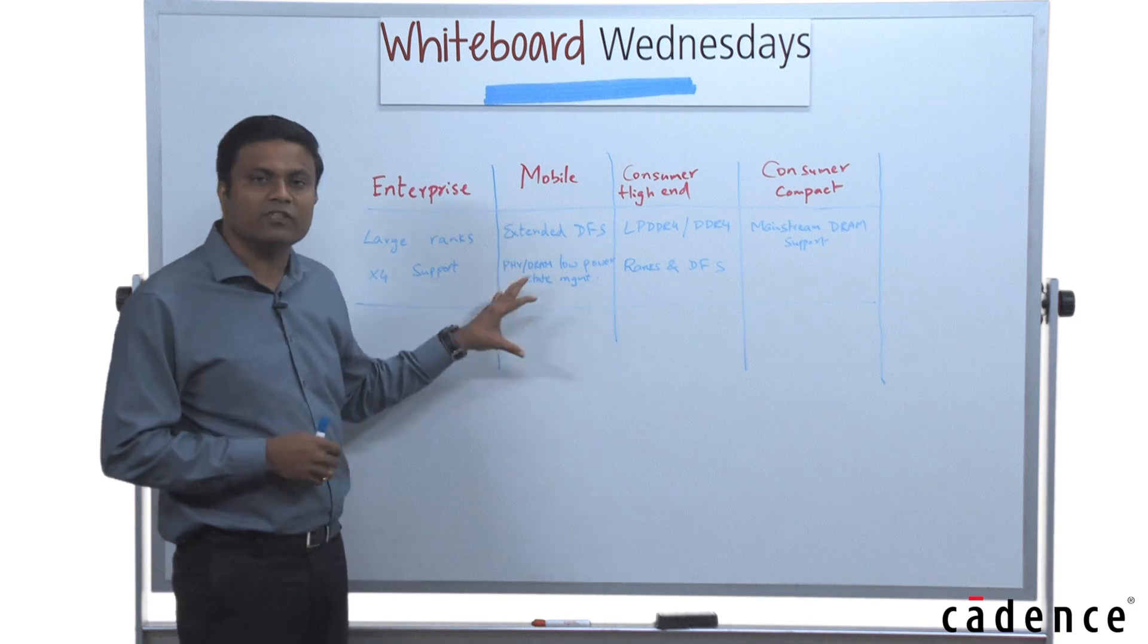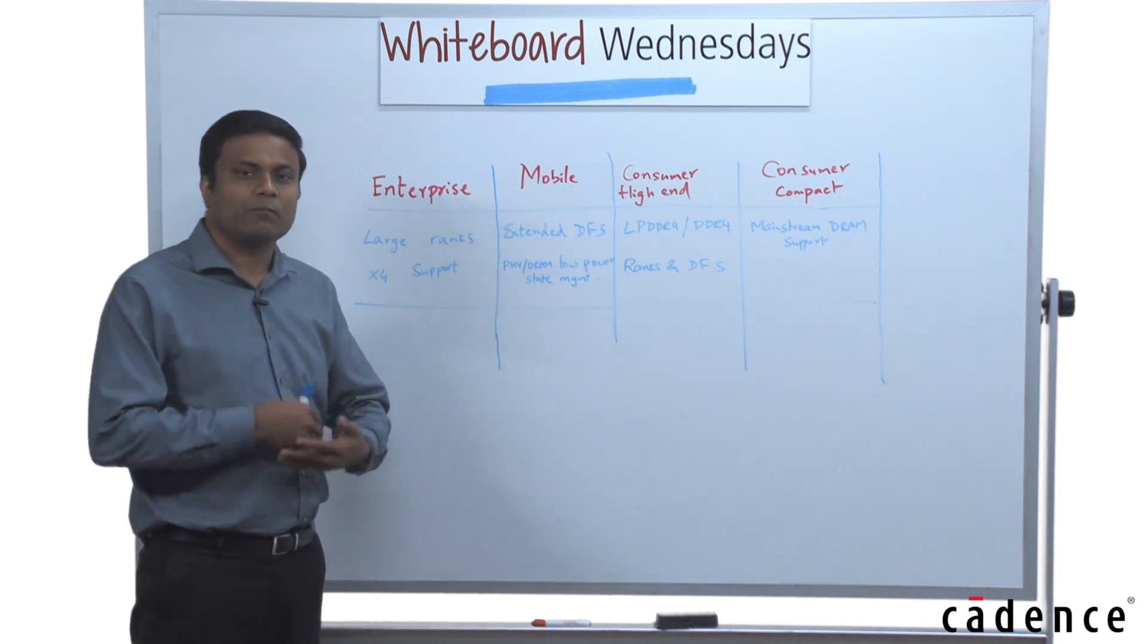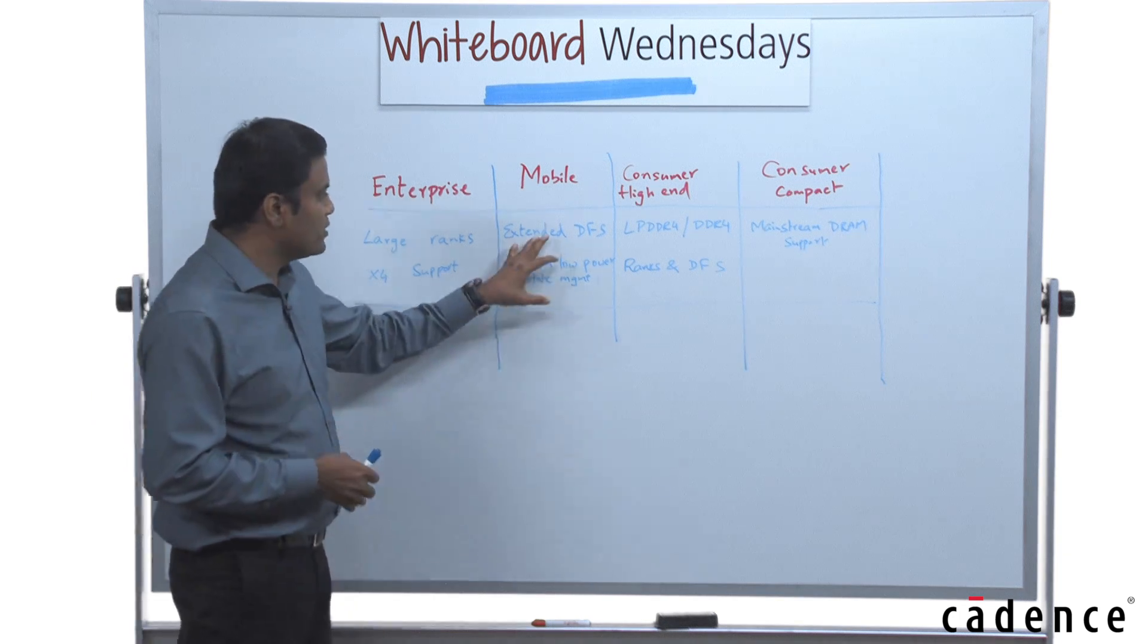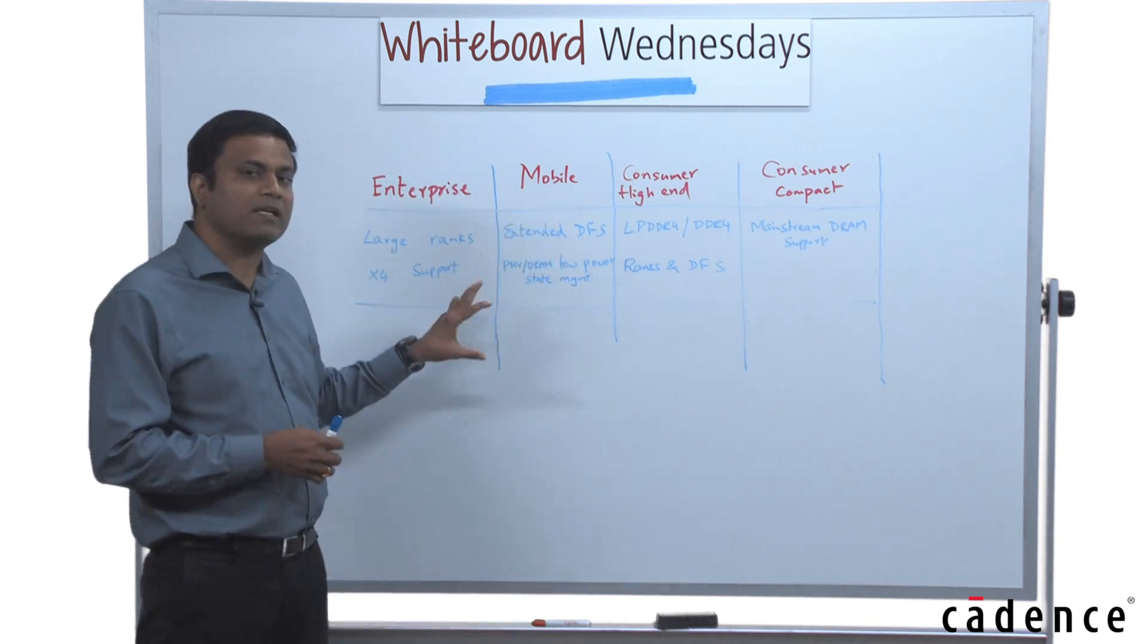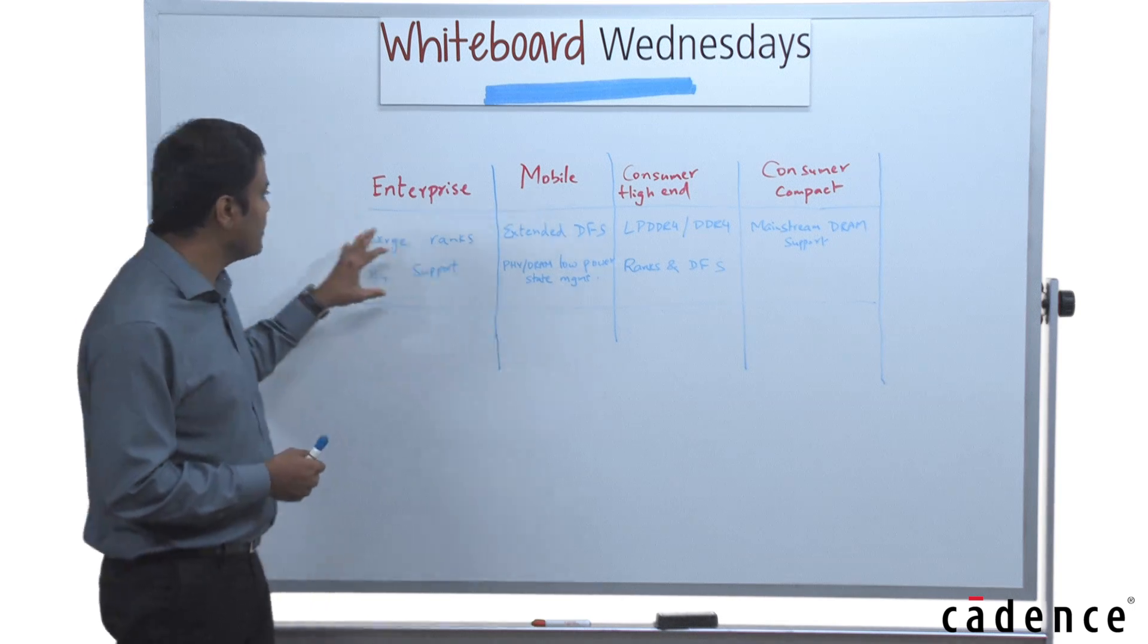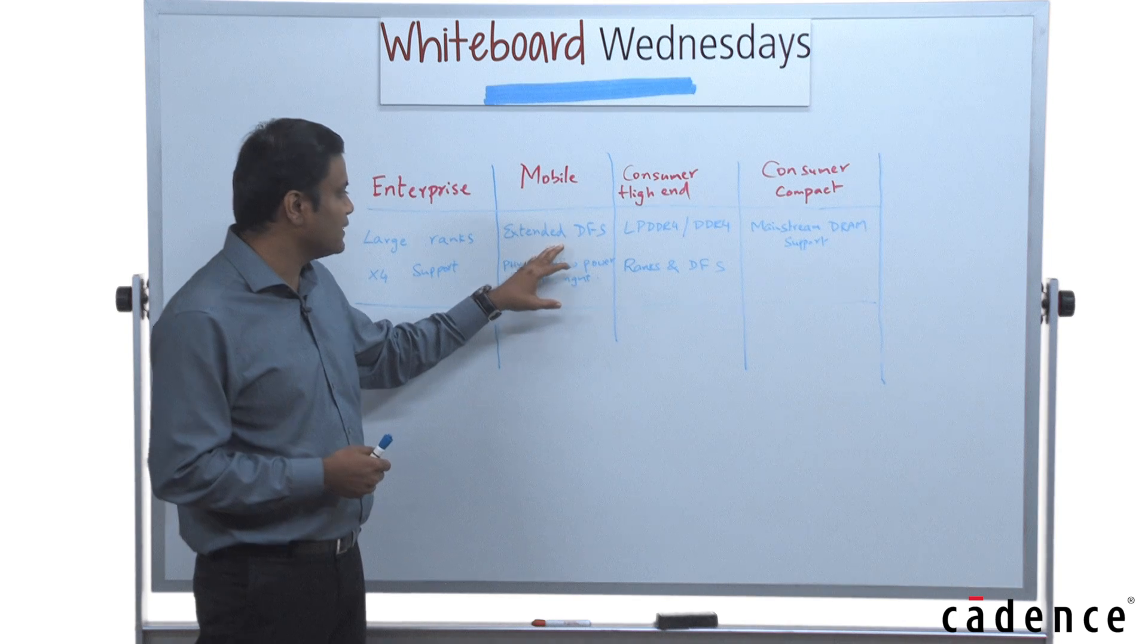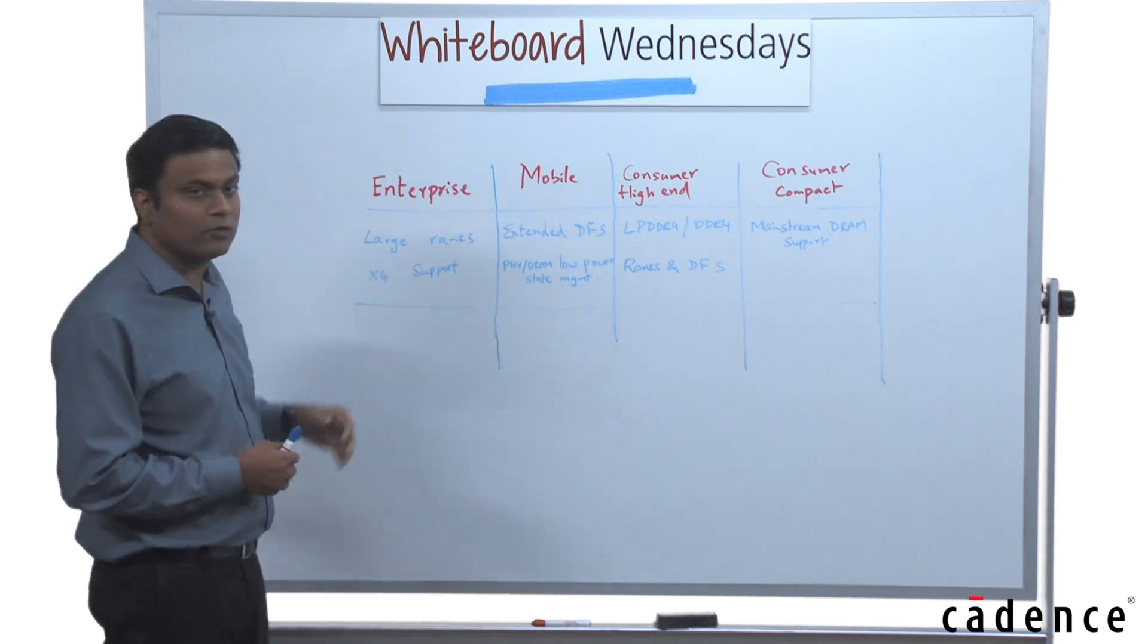Implementation of these features adds gates, power, and area to the PHY implementation, which some of the application spaces don't need. For example, the enterprise features like large ranks are never utilized in mobile, while the extended DFS are not of high value for enterprise.